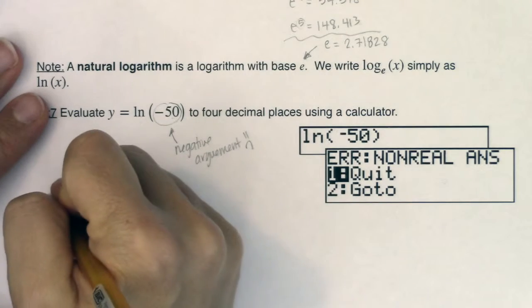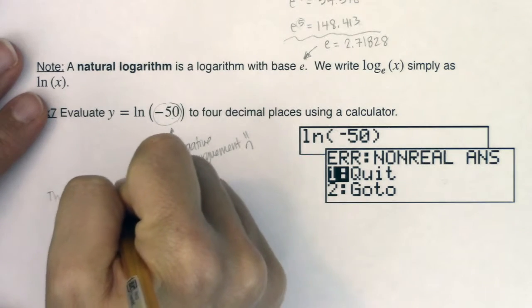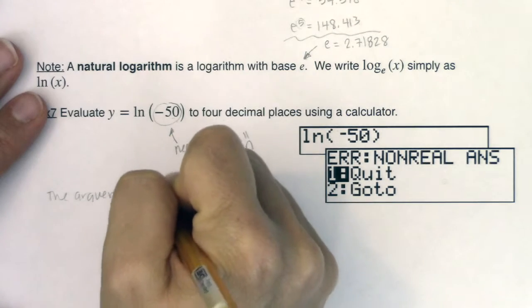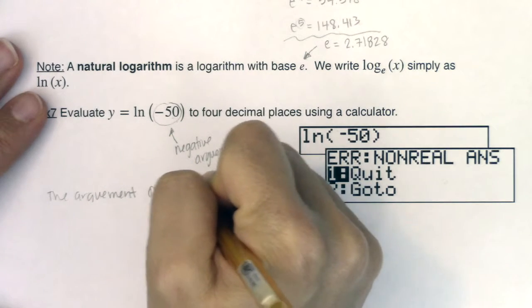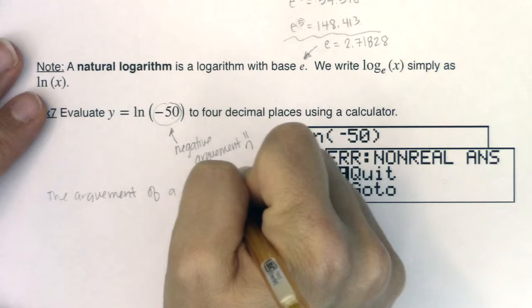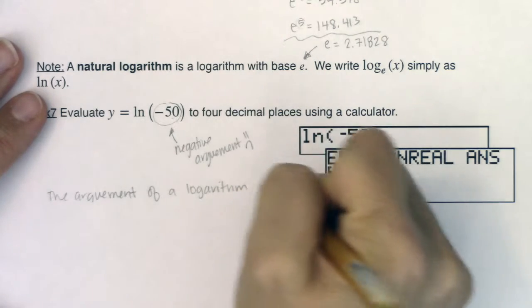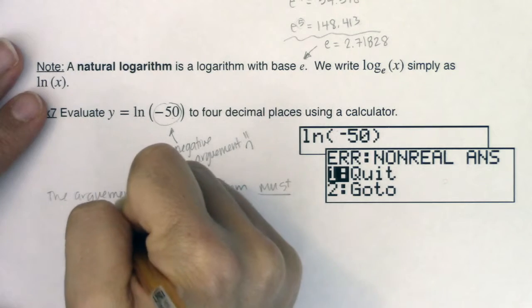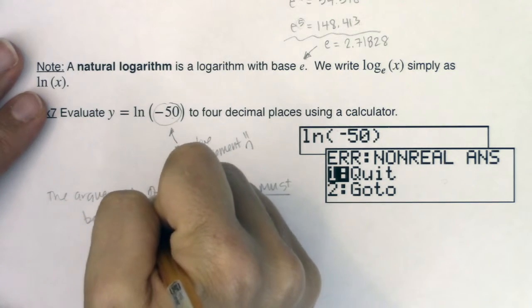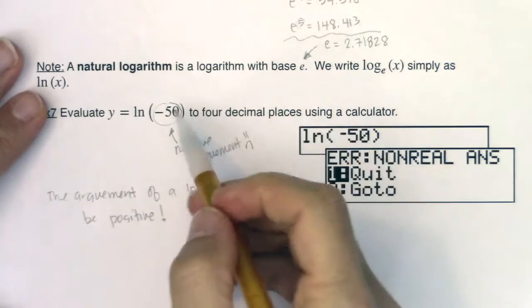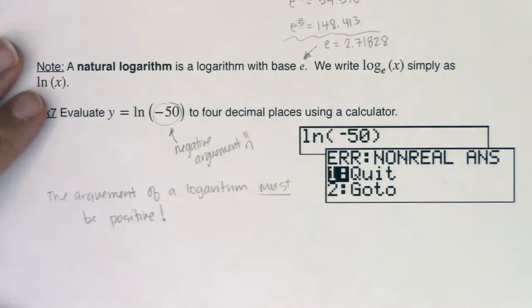So just to reiterate, the argument of a logarithm must be positive. And when I say it must be positive, it can't be negative, and it can't be zero either.